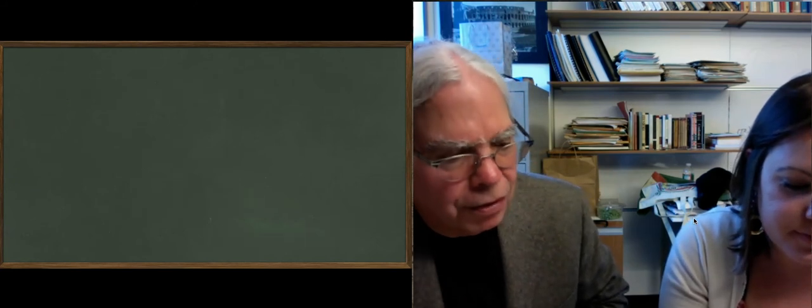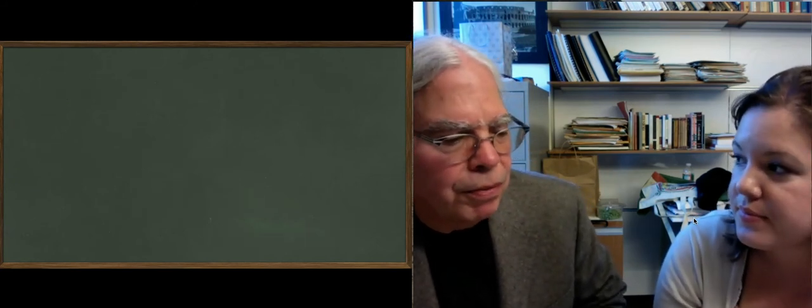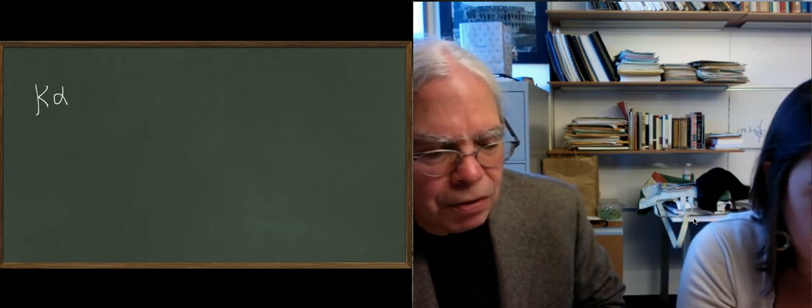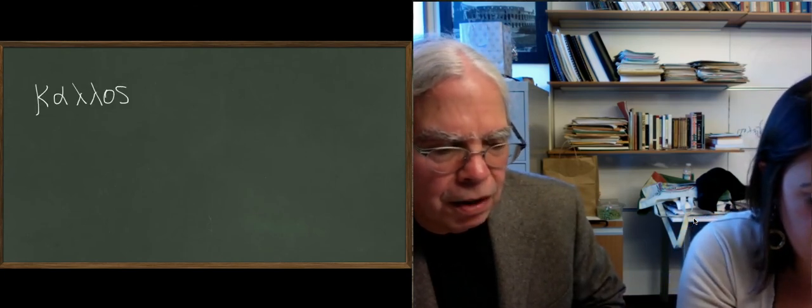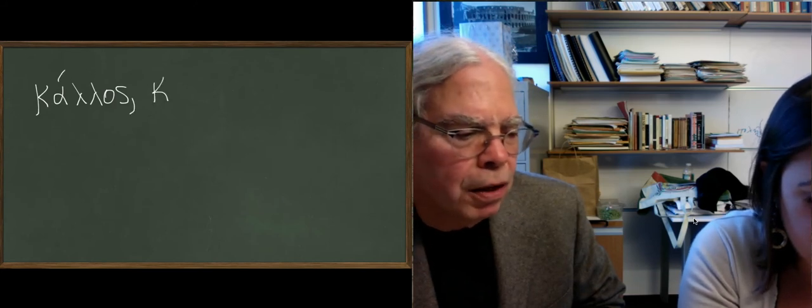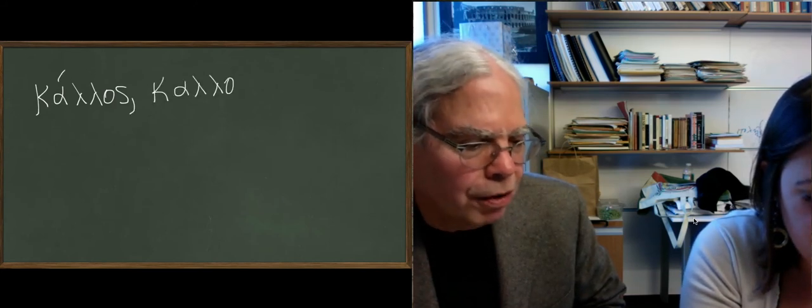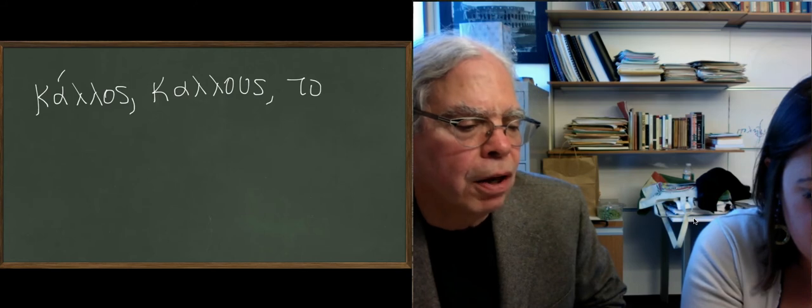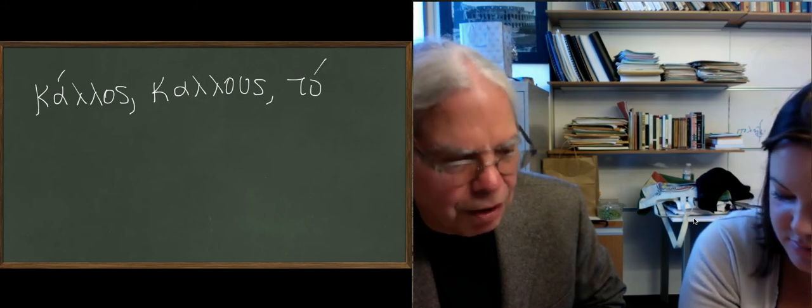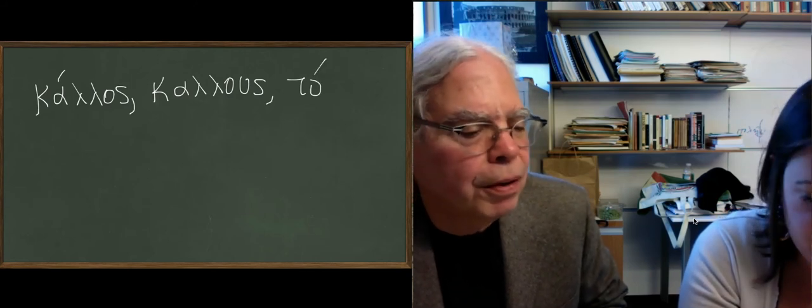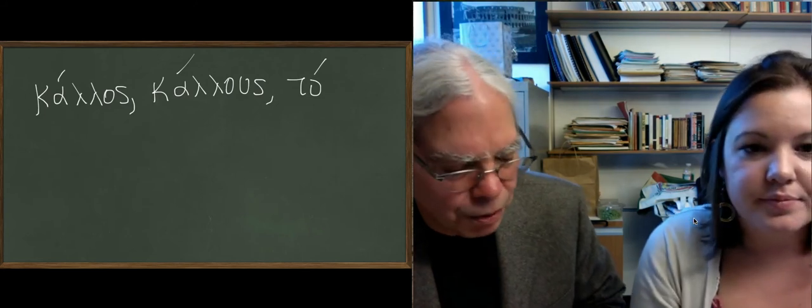Another important noun in this lesson is the one we mentioned in class today, briefly, kalos, with two lambdas. The s-stem noun is derived from the adjective kalos, kale, kalon, which means beauty. Kalos, kalous is the genitive, and it's neuter, ta, and it means beauty. Accent on the first syllable. So it means beauty.